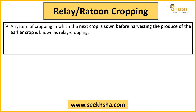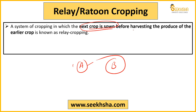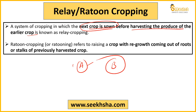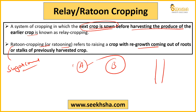In relay cropping, the next crop is sown before harvesting the earlier crop. For example, the first crop is near maturity — almost mature — but not yet harvested. The next crop is sown before harvesting the earlier crop. For return cropping, the concept is basically regrowth — for example, in sugarcane, after the harvest the ratoon or stalks are used for regrowth for the next harvest.